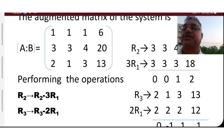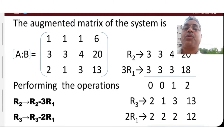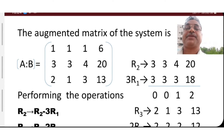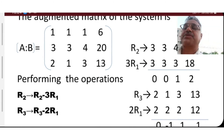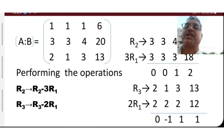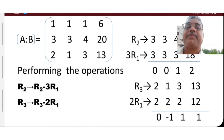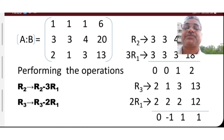Now apply row operations: R2 gives R2 minus 3R1, and R3 gives R3 minus 2R1. For R2: [3, 3, 4, 20] minus 3×[1, 1, 1, 6] = [0, 0, 1, 2]. For R3: [2, 1, 3, 13] minus 2×[1, 1, 1, 6] = [0, -1, 1, 1].